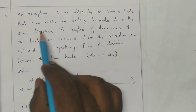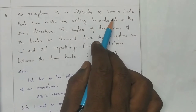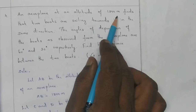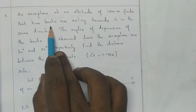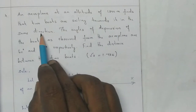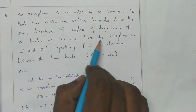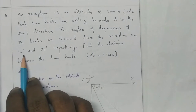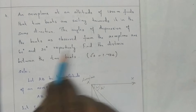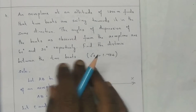An aeroplane at an altitude of 1800m finds that two boats are sailing towards it in the same direction. The angles of depression of the boats as observed from the aeroplane are 60 degrees and 30 degrees respectively. Find the distance between the two boats. Root 3 is 1.732.